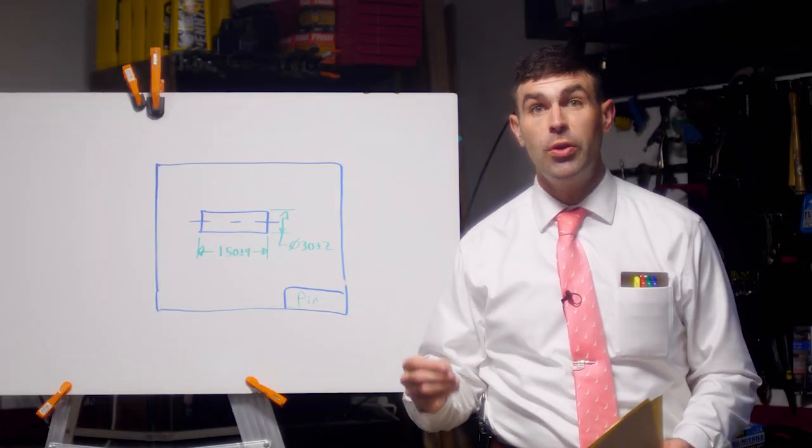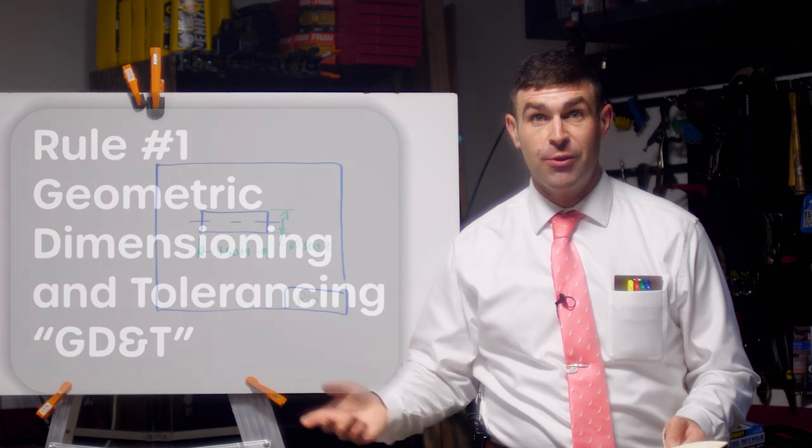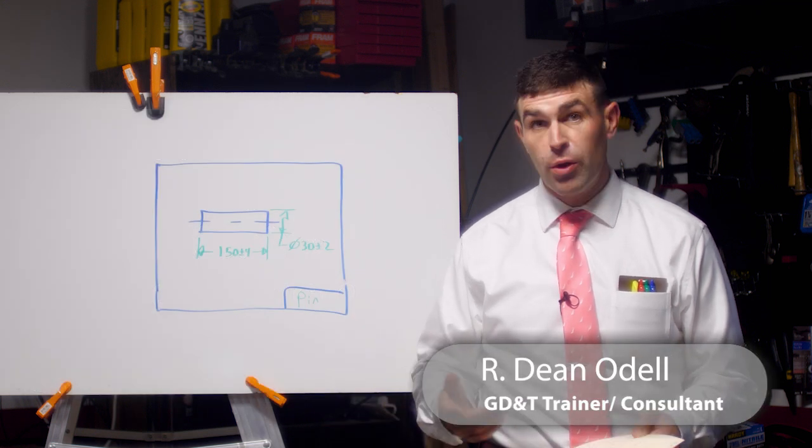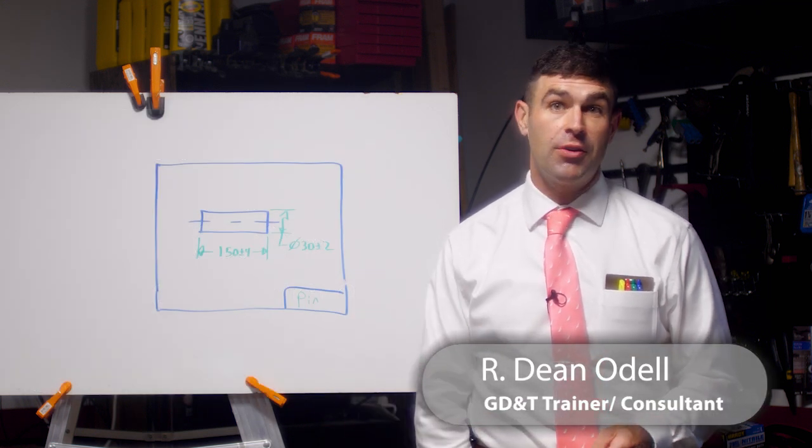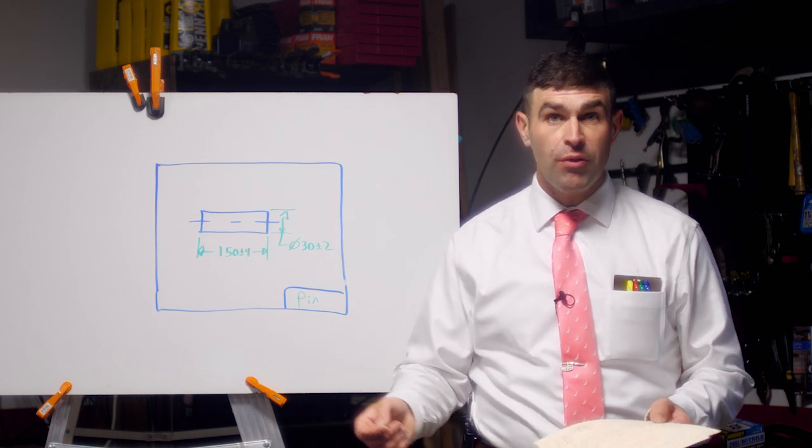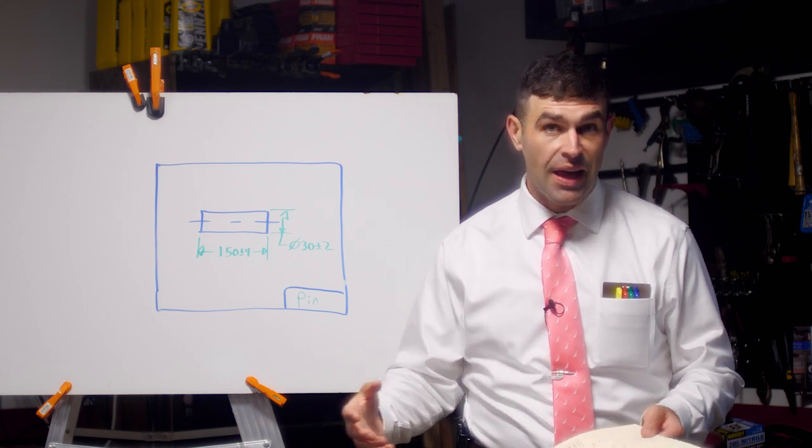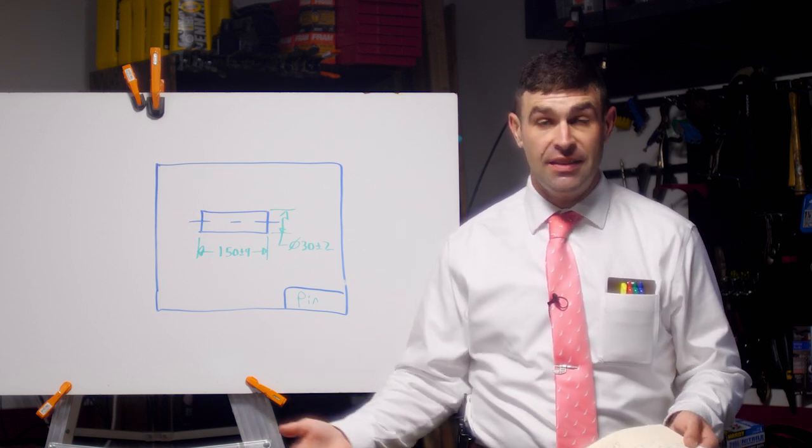In this video, I'm going to discuss rule number one from ASME, or American Society of Mechanical Engineers, Y14.5 geometric dimensioning and tolerancing. Some of you may have heard of this rule before. Some of you may have no idea what I'm talking about, but it's a foundational topic in GD&T.